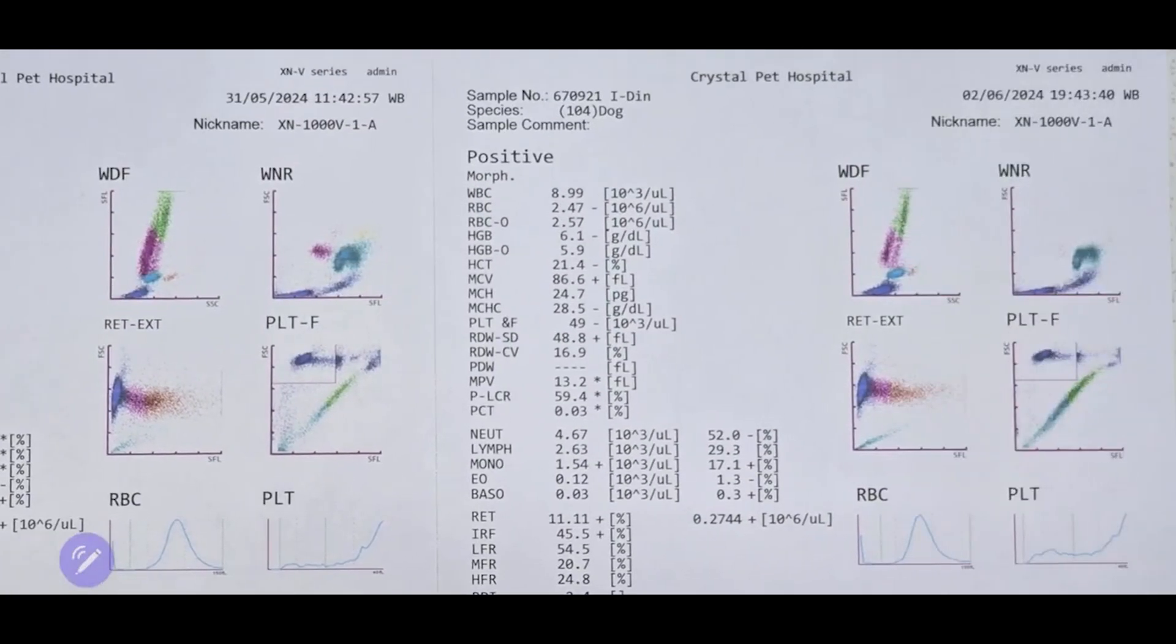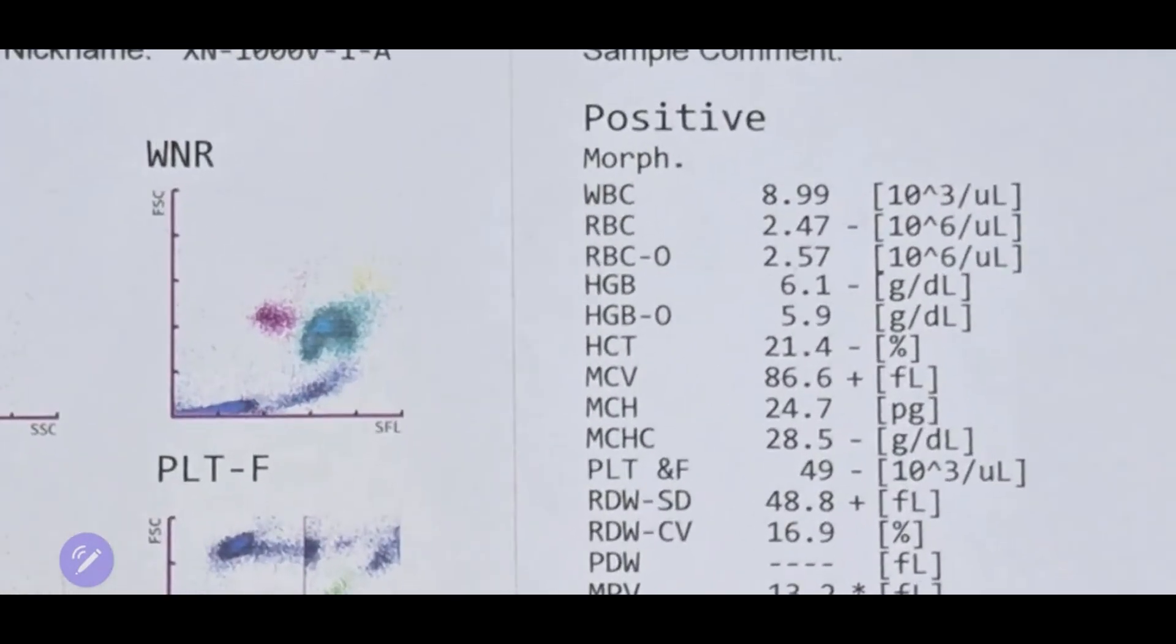Now, let's examine the WNR channel. The pattern that emerged resembles cancer cells, right? However, the first thing we need to check is whether it exceeds the 3.5 threshold. If it does, it is the lab's responsibility to redistribute the cells and create a new grading to ensure accuracy.